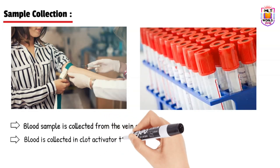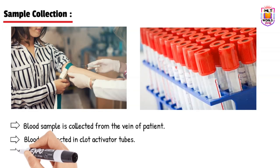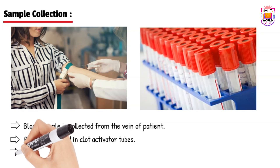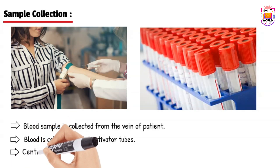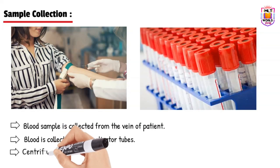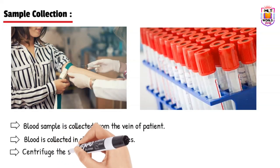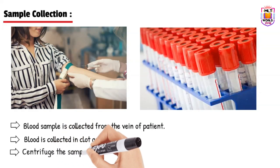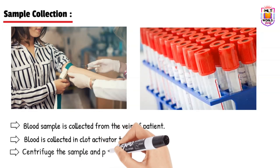To perform the uric acid test, we basically require serum. That is why we collect blood in a clot activator tube, as you can see in the tube diagram shown in the video.